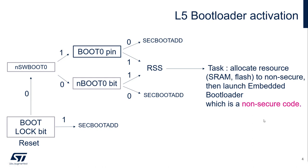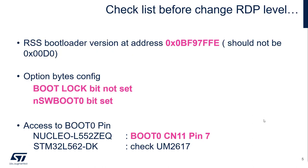So what is the full checklist before trying to activate RDP? First, check the RSS bootloader version — I give you the address, it's also in the reference manual. This RSS bootloader version should not be D0. If you have D0, that means you don't have a full RSS mechanism, so please take care. Then check the option byte config we already discussed: boot lock bit should not be set, while the NSoftware Boot T0 bit should be set. Finally, ensure that on your target you can access the boot T0 pin. On the Nucleo it's quite simple — it's connector 11, pin 7. For the development kit, please check the user manual of the board; it's well explained but a little bit tricky, frankly speaking.